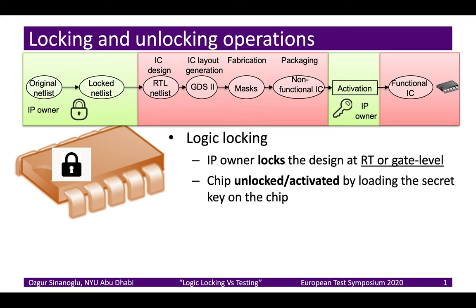Logic locking is a transformation of a given netlist at either the gate or the RT level. A netlist goes through an operation where we insert additional gates, remove gates, or make modifications, and we obtain a locked netlist that is different from the original. It is this locked netlist that goes through the supply chain we don't necessarily trust, and at the end we obtain fabricated chips with this locked netlist implemented. The locked netlist has circuitry that accepts a key, and only when a secure facility loads the key onto the chip is it unlocked.